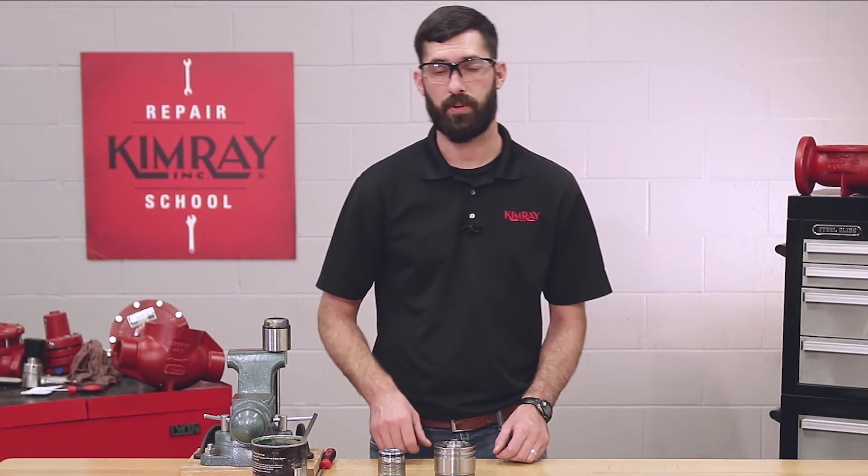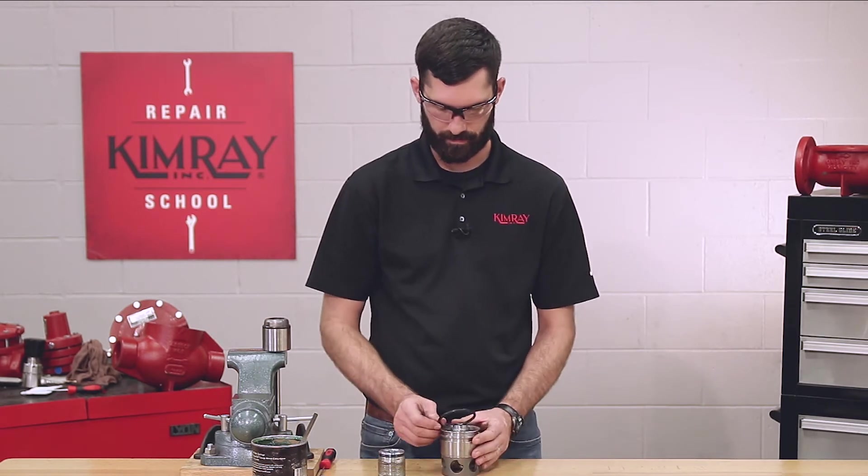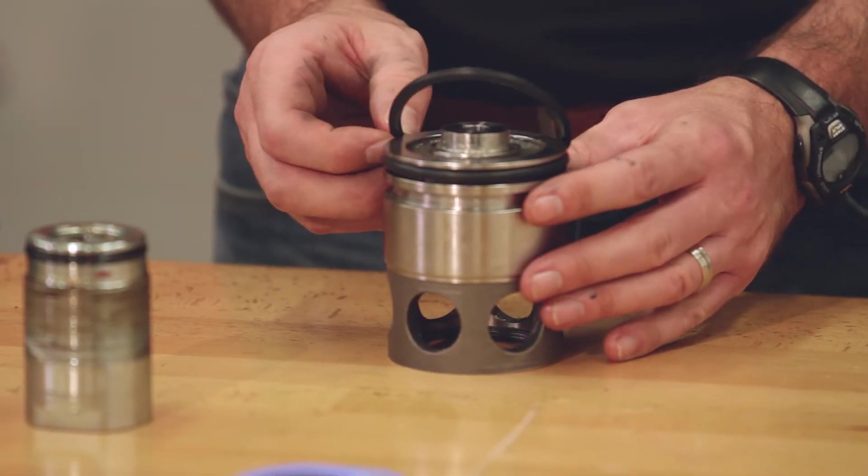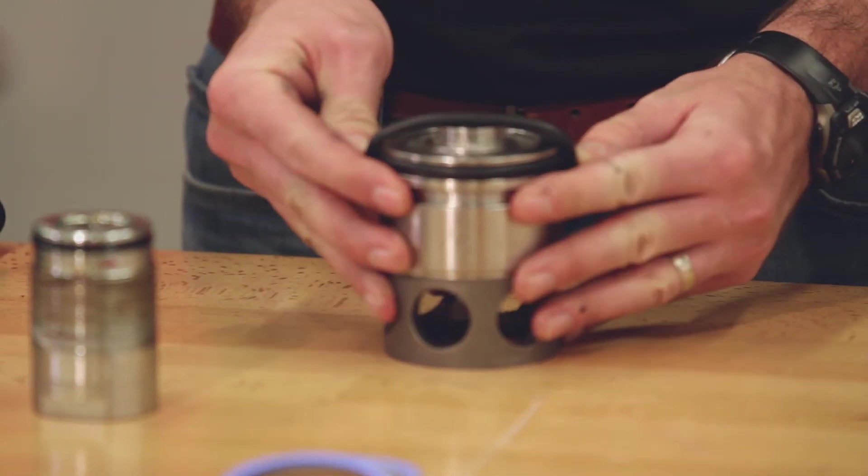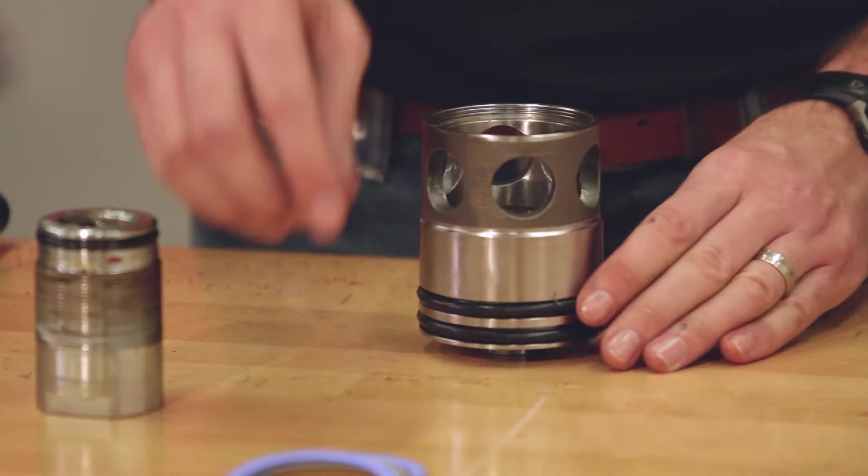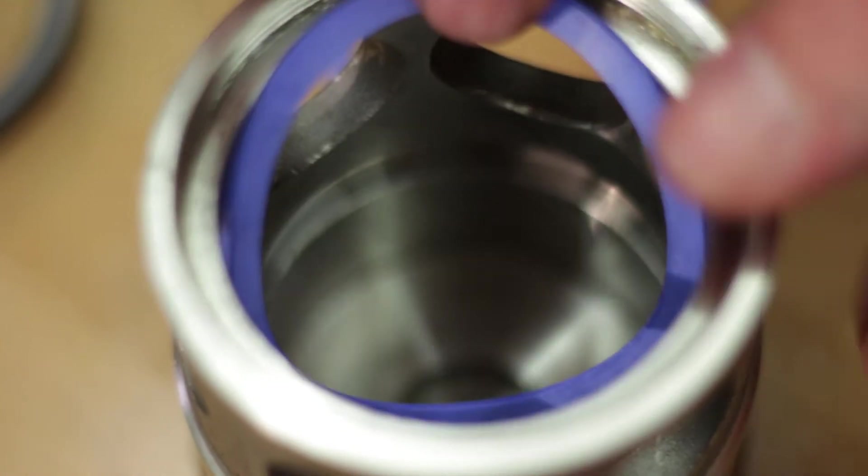Now you can install your two outer o-rings on your cage. And your two back-ups and quad-ring on the inside.